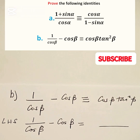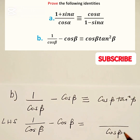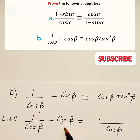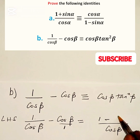Now if we take the LCD, the lowest common denominator, that is cos beta. We get 1 times 1 on the numerator from the first term, and then 1 into cos beta times cos beta gives us minus cos squared beta on the numerator, all over cos beta.